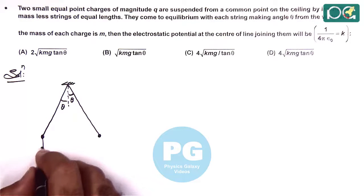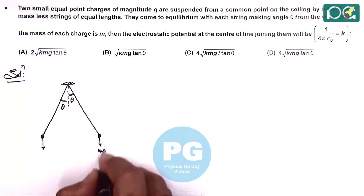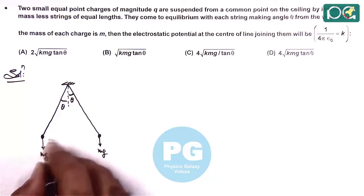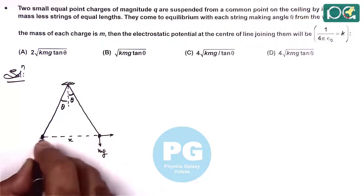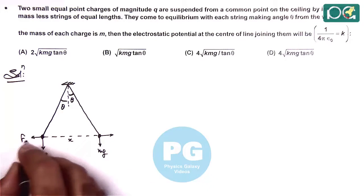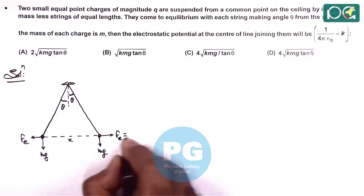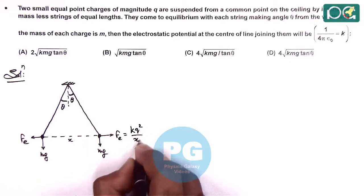Downward is the weight acting on the two masses, Mg and Mg. If we consider the separation between the two is x, then they will repel each other with the electric force Fe. The value of Fe is given as Kq² by x².